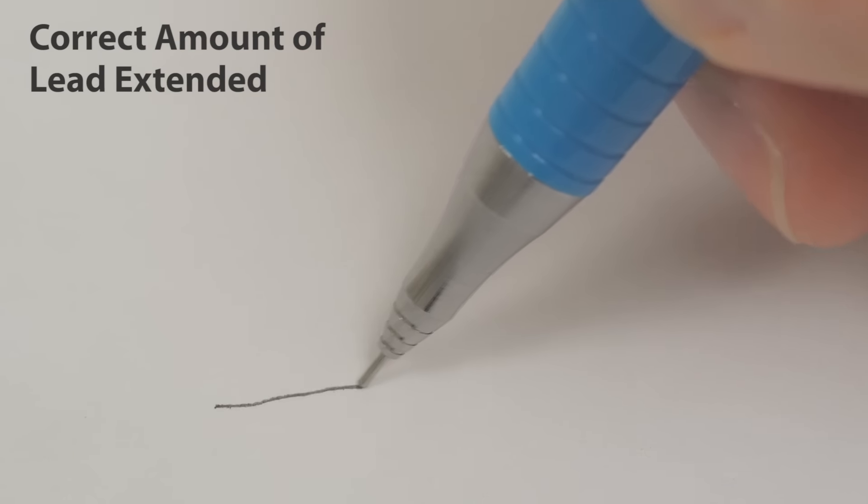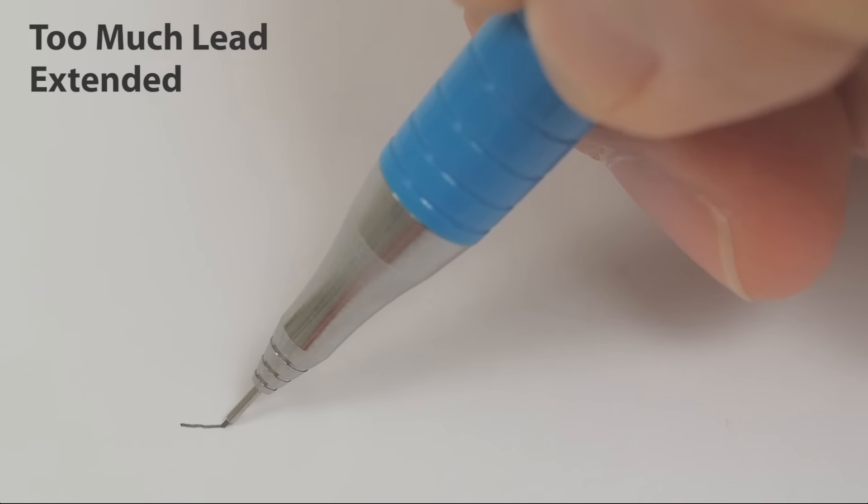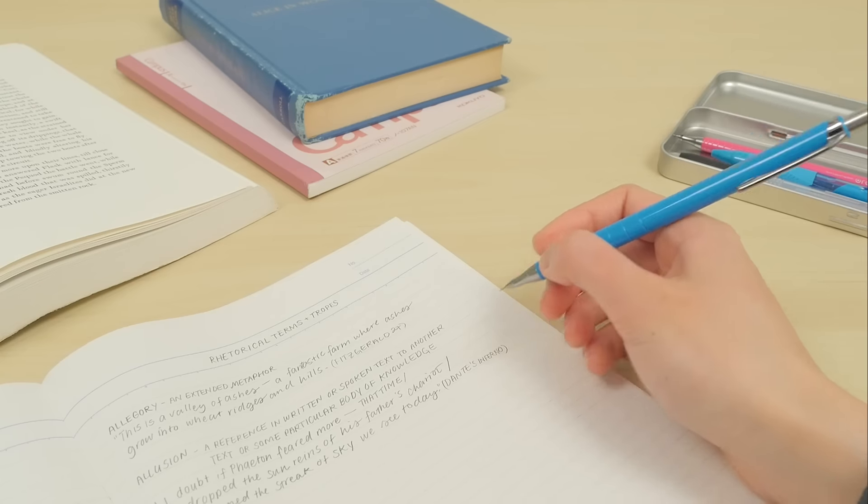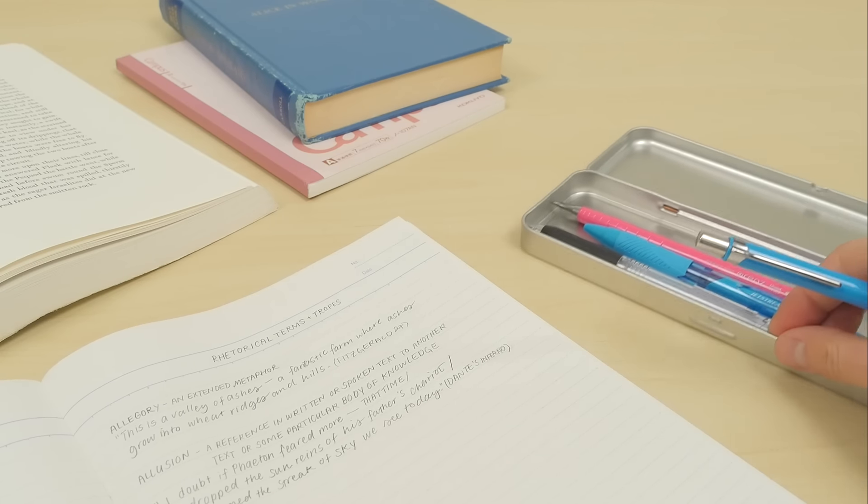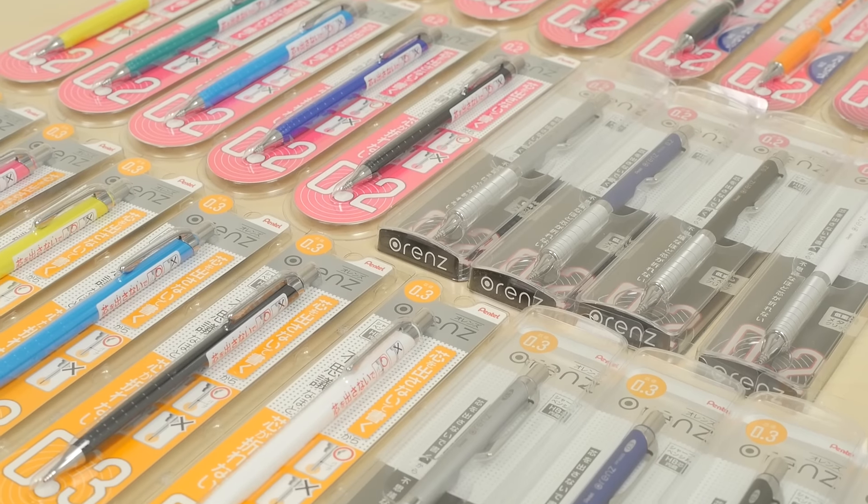Be sure not to extend the lead too much beyond the pipe or it will break. Once you're done writing, retract the lead so it doesn't poke you or your belongings. In addition to the 0.2 and 0.3, the Orenz comes in 0.5 millimeters and a variety of fun colors.